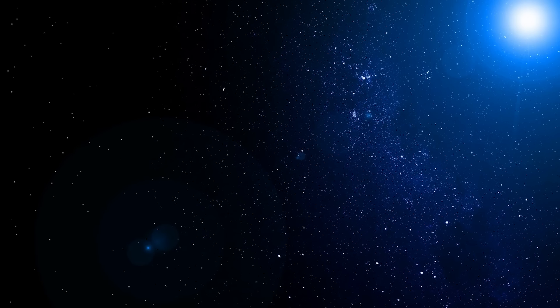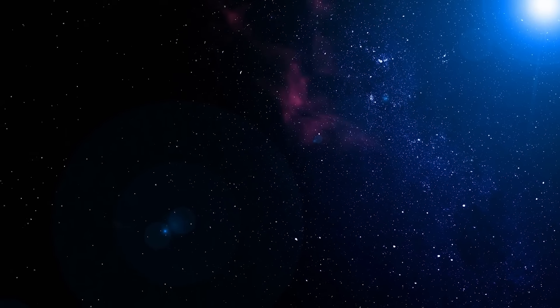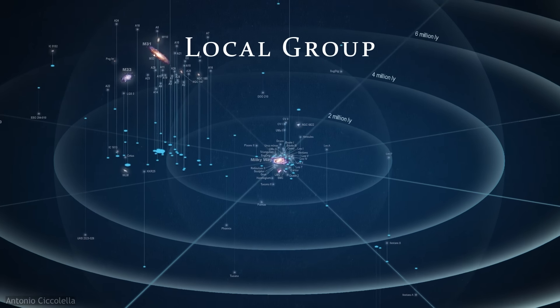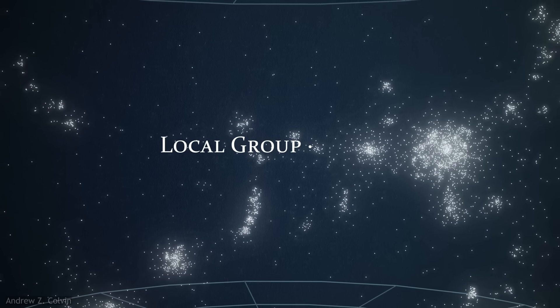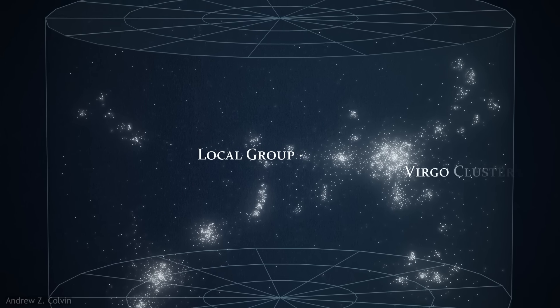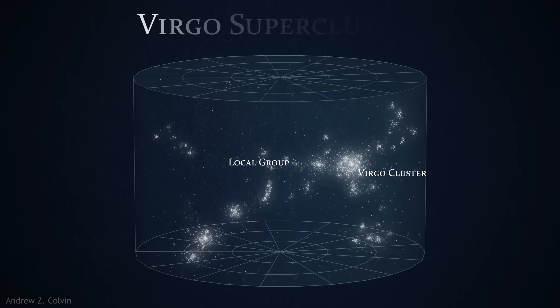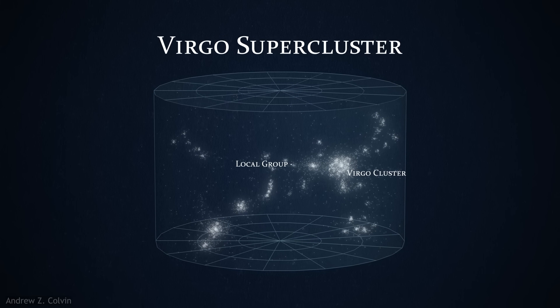The only objects that will survive the growing darkness will be those that are already gravitationally bound. This means that our local group will survive, although transformed as its individual member galaxies coalesce. And it means that clusters like Virgo will also survive, safe harbors for the thousands of galaxies that already call it home.